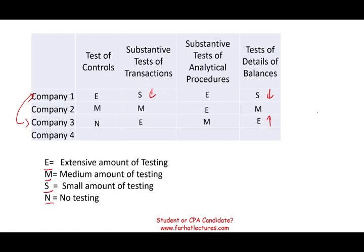Company four is initially assessed as having medium internal control, similar to company two. But as we test the controls, we find more and more problems. Although we assessed it as medium initially, it's not as good as we thought. So we're no longer doing medium substantive testing — we move to extensive substantive test of transaction, extensive analytical procedures, and extensive test of detailed balances. The test of control remains medium, but the discovery of weaknesses increases audit hours and cost.